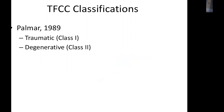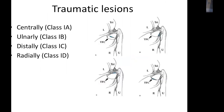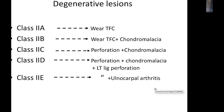The TFCC is classified according to Palmer into traumatic (class 1) and degenerative (class 2). Class 1 is subdivided into: 1A — central tear, 1B — ulnar injury, 1C — distal injury, and 1D — radial injury.